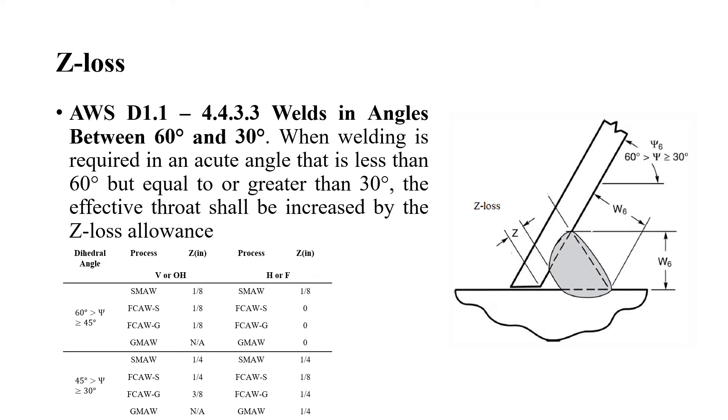Additionally, when the angle between the two plates to be joined is less than 60 degrees and greater than 30 degrees, the z-loss factor has to be considered. The z-loss is the dimension which is used to account for the likely incidence of poor quality welding in the root of a joint with a small angle. This value is a function of the dihedral angle, the welding process, and the weld position.